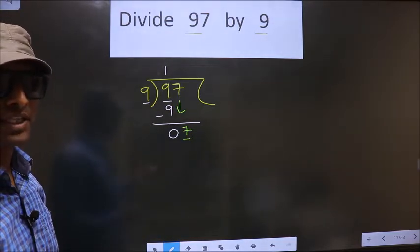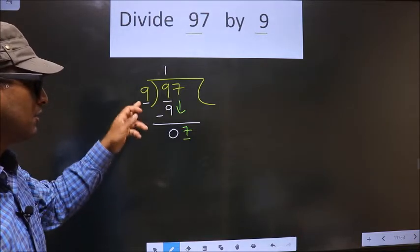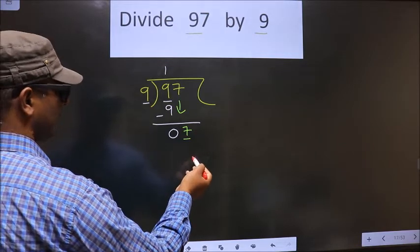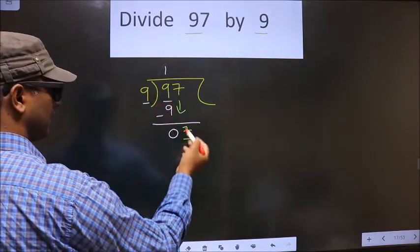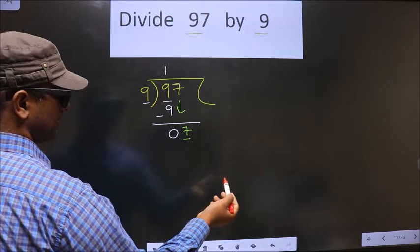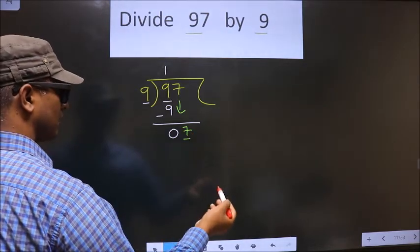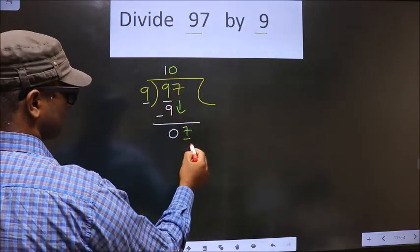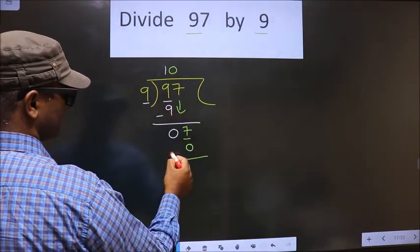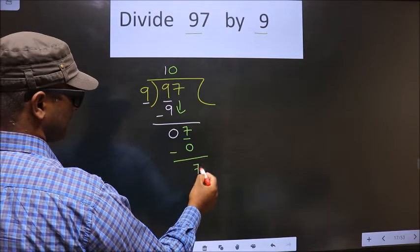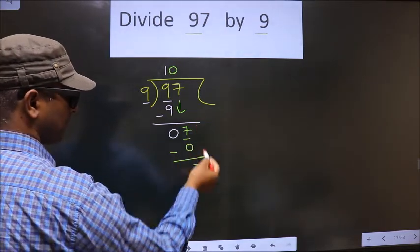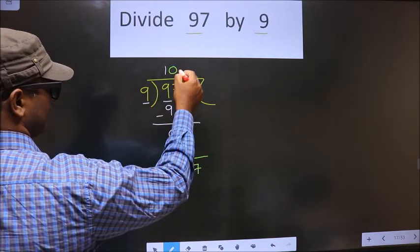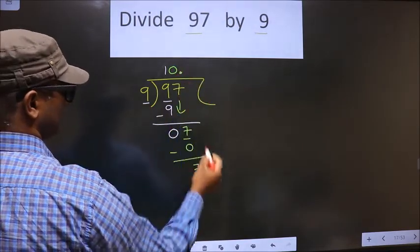Instead, think: what shall we multiply 9 by to get a number close to 7? If we multiply by 1 we get 9, and 9 is larger than 7. So we multiply by 0 — 9 into 0 is 0. Subtract and get 7. Now, since we did not bring any number down and 7 is still smaller than 9, now we place the decimal point and bring down a 0.